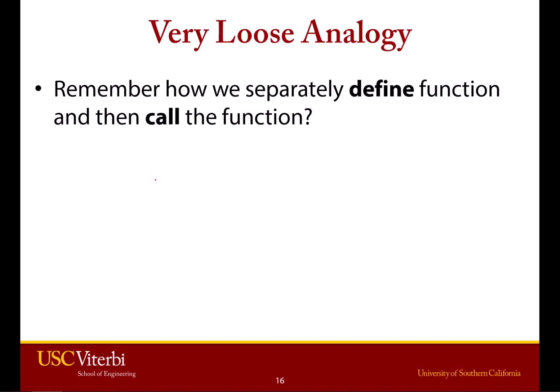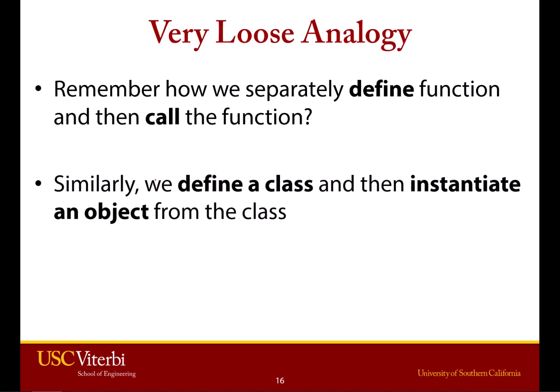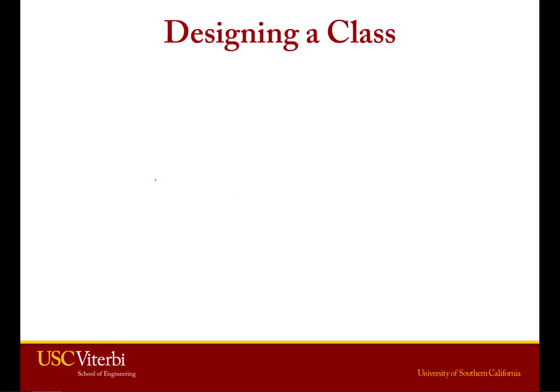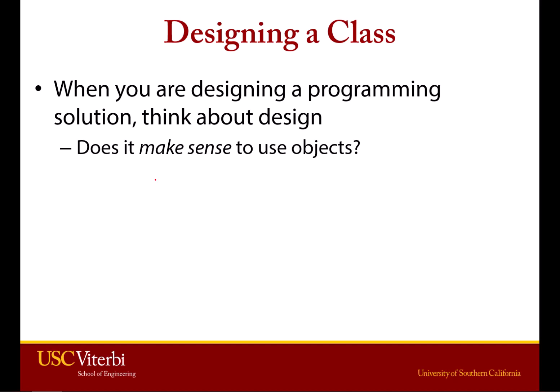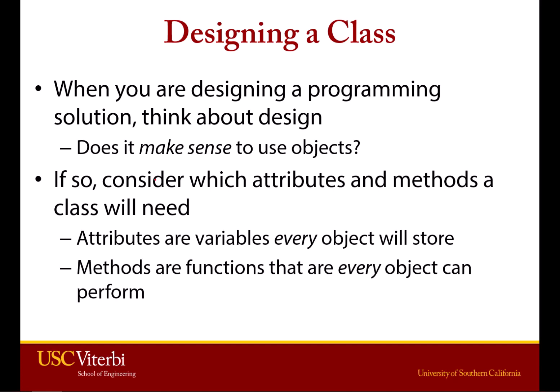When we talk about functions, we say we define the function — a general idea of what it's going to do — but nothing actually happens until we call it. You can think of defining a class as similar: you define it, but you haven't created any actual objects. It's only when you instantiate it that you see examples of it in your program. When you set out to define a class, ask yourself: does it make sense to use objects? If so, consider what attributes and methods you might need. This helps you design what your object is going to do in your program.